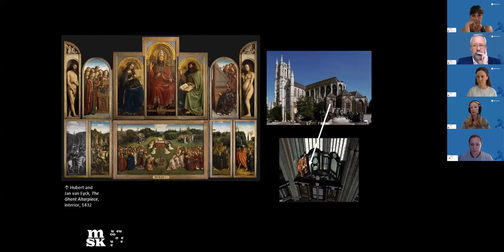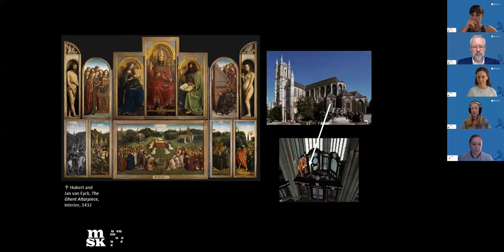I should mention that this photograph was taken prior to the current conservation project. At present, only ten panels of Coxsy's copy are preserved, which are held in three different museums across Northern Europe: namely in the Royal Museum of Fine Arts of Belgium, in the Städtliche Museum zu Berlin, and in the Alte Pinakothek in Munich. The panels depicting the Adam and Eve, and part of the Annunciation scene, are considered lost at present.